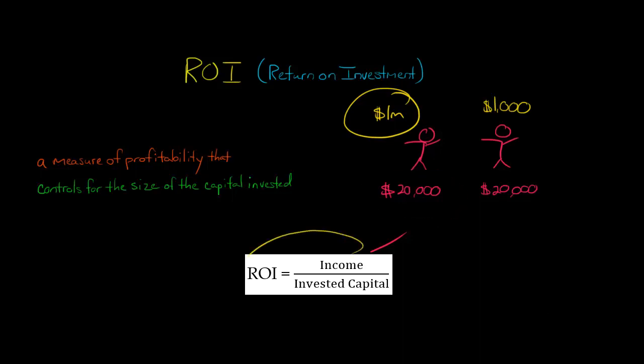So ROI controls for this. ROI says, hey, look, it's great to have profit, but we want to say what was the scale here? How much did you start with?